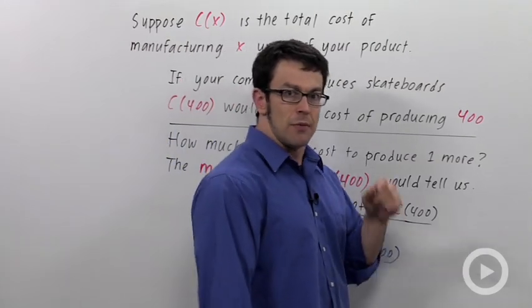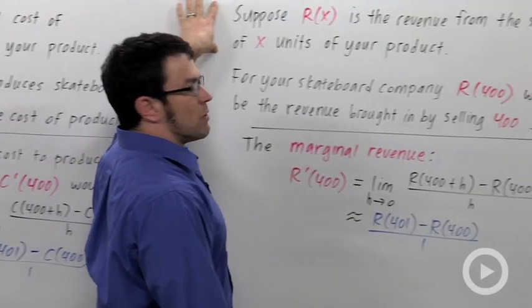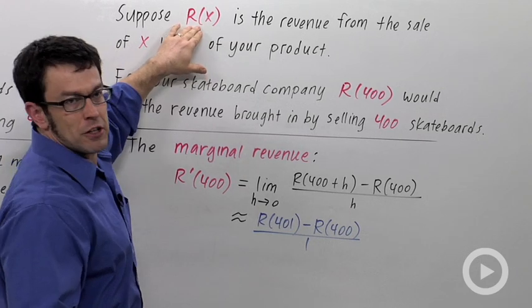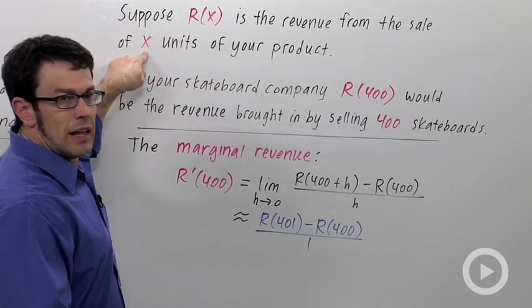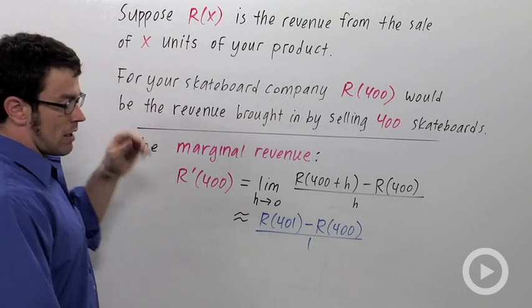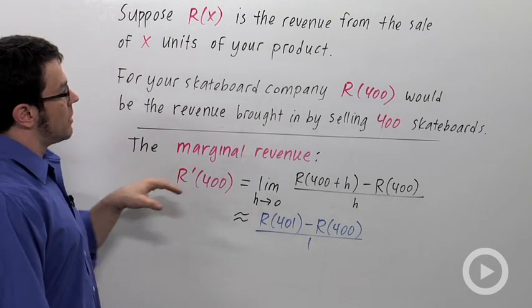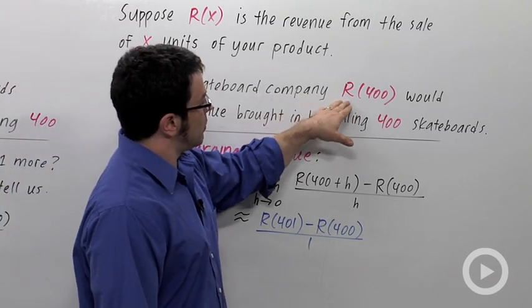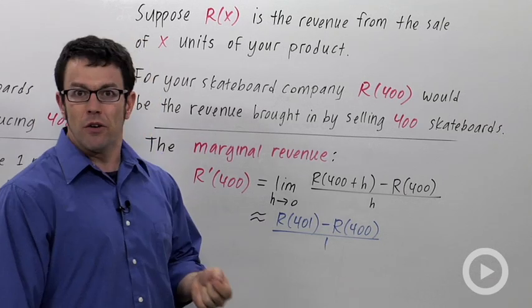And there's a similar concept with revenue. So suppose R of X is the revenue function for your company when you sell X units of your product. If your product is skateboards, then R of 400 would be the revenue generated by selling 400 skateboards.